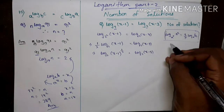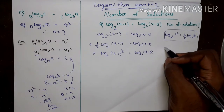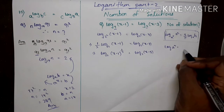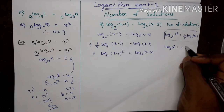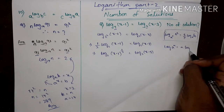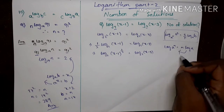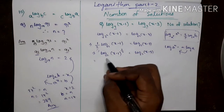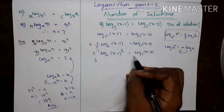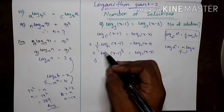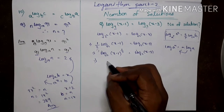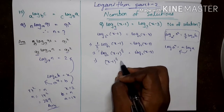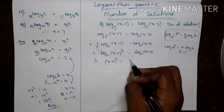Using the reverse rule: log A to the power M equals M log A. Both sides have log_2, so I cancel it on both sides, giving (x-1)^(1/2) equals (x-3).